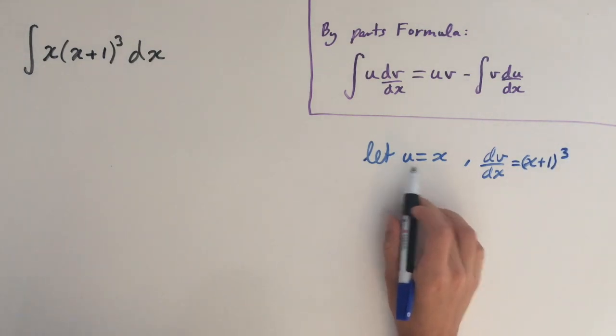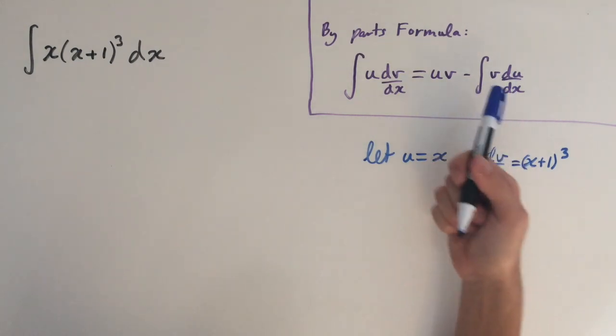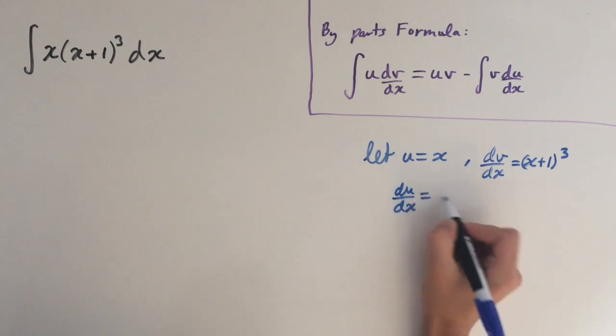So the reason we choose u to equal x is because when we differentiate it, it's just going to go to 1. So this makes the second integral a lot easier. So du dx equals 1.